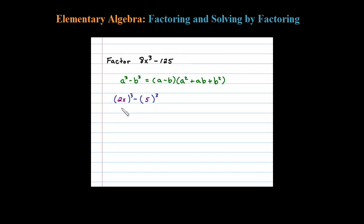For the formula here, a is 2x and b is 5. So when we factor this we have a minus b, so 2x - 5, times a², so 2x², plus a times b, 5 times 2x or b times a, plus b² in this case 5².